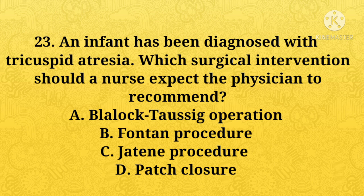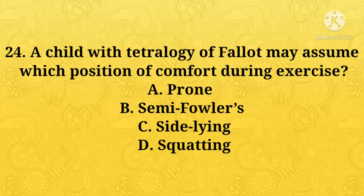An infant has been diagnosed with tricuspid atresia — which surgical intervention should the nurse expect the physician to recommend? A: Blalock-Taussig operation, B: Fontan procedure, C: Jatene procedure, D: patch closure. Option A, Blalock-Taussig operation, is the right answer.